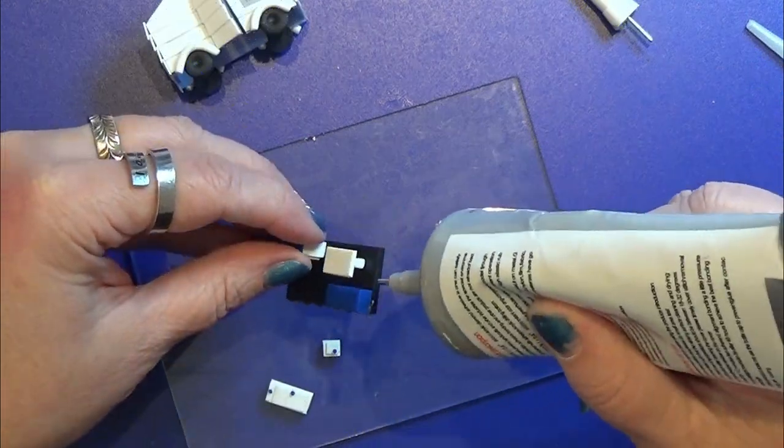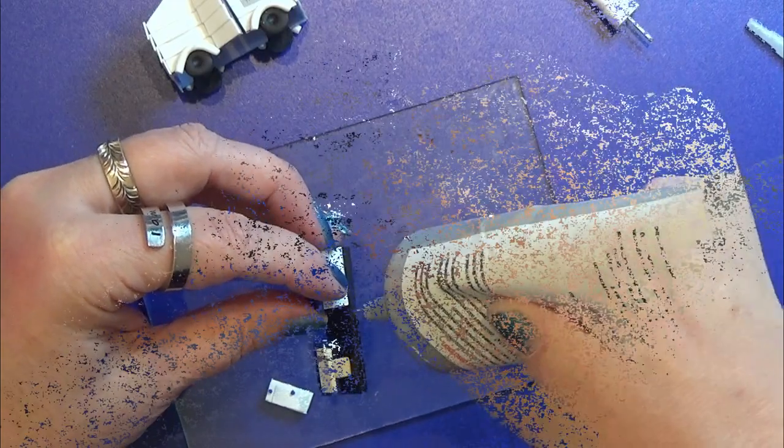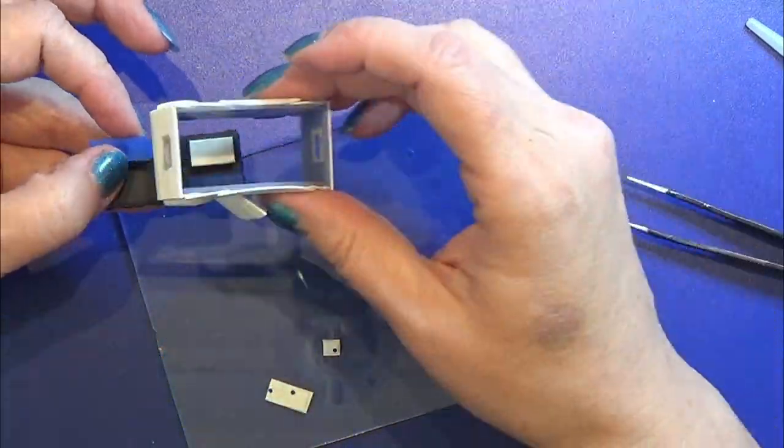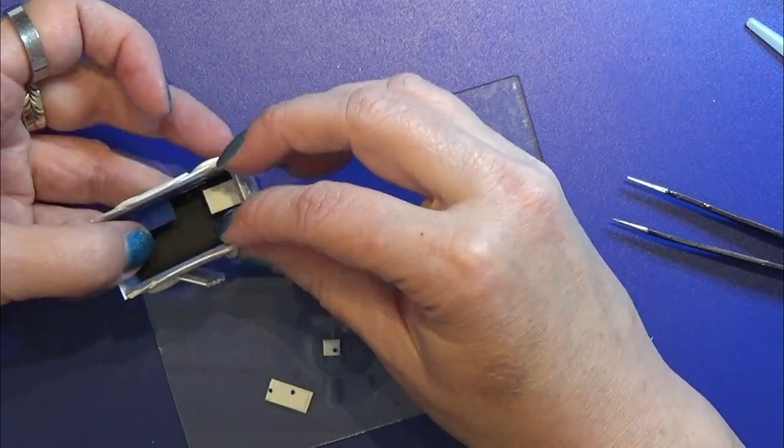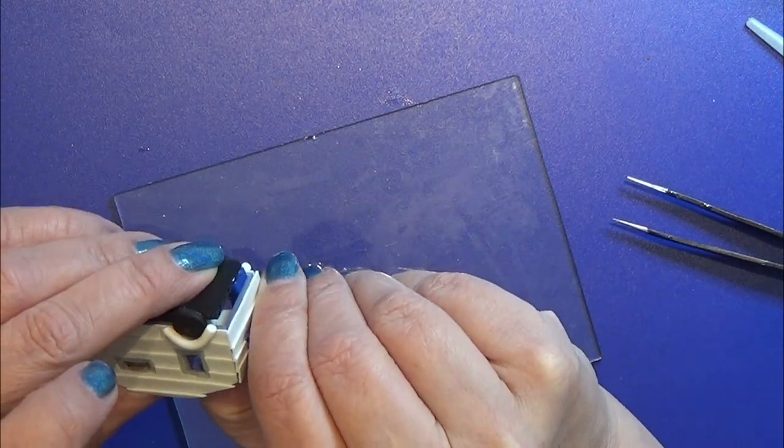Now I'm just going to glue the bottom of the caravan in place. Then I will glue the wardrobe and the little wall cabinet in their places as well.